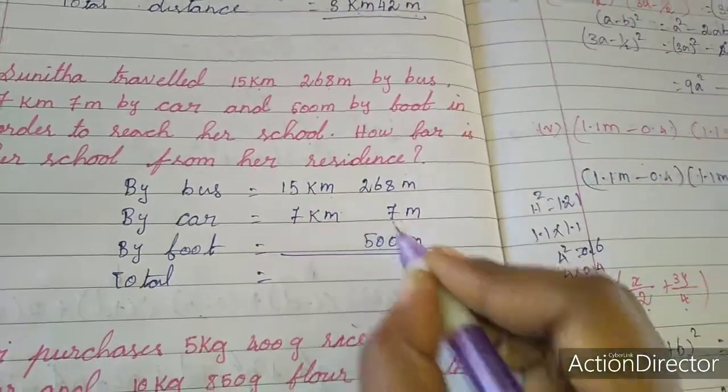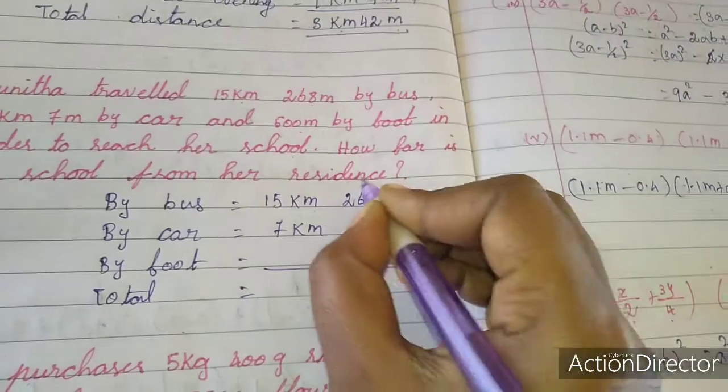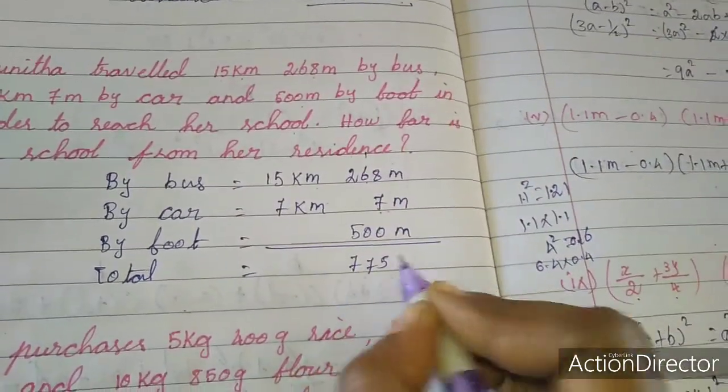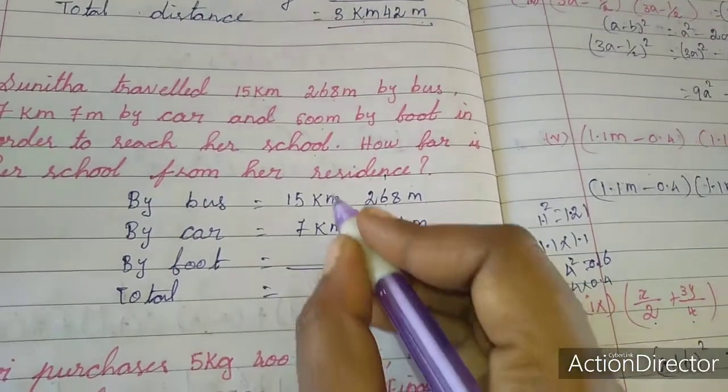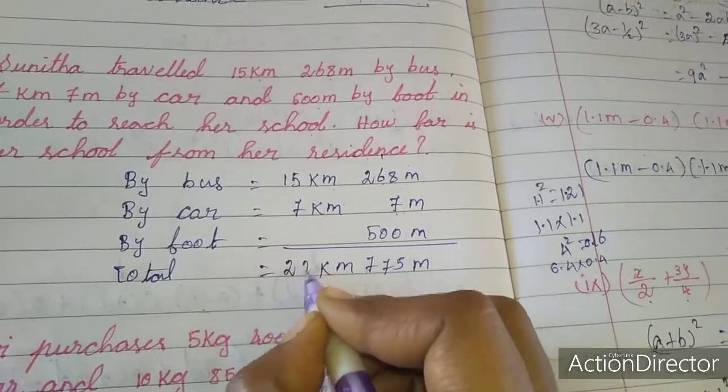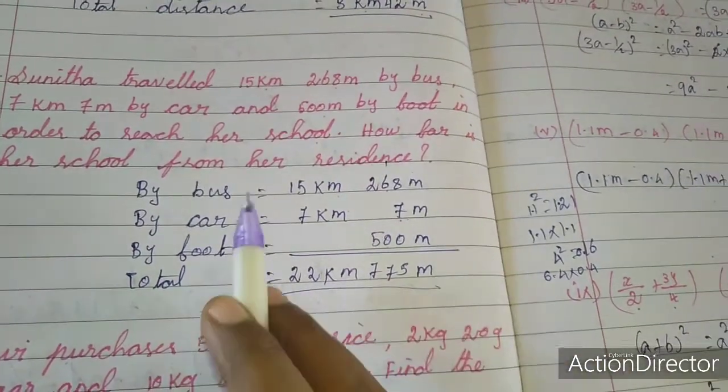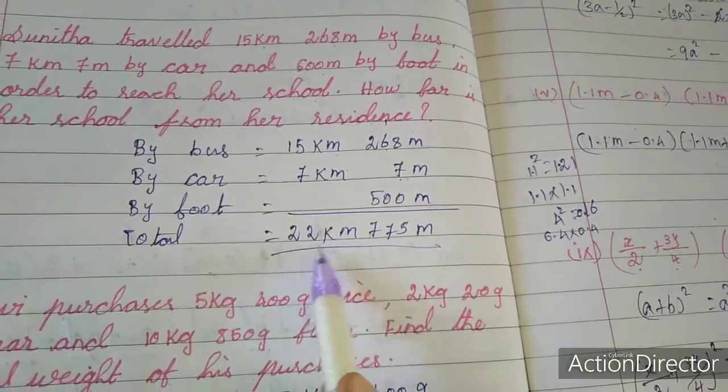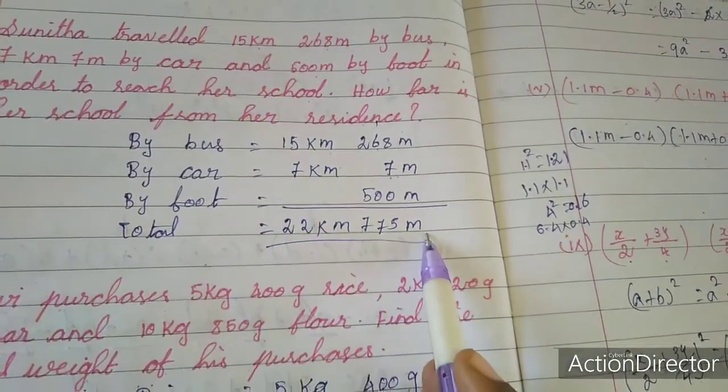We have to add. See here 8 plus 7 is 15, 5 carrying 1. 1 plus 6 is 7, 2 plus 5 is 7, so 775 m. Here kilometre will come. 15 plus 7 is 22. So from school to residence is 22 km and 775 m.